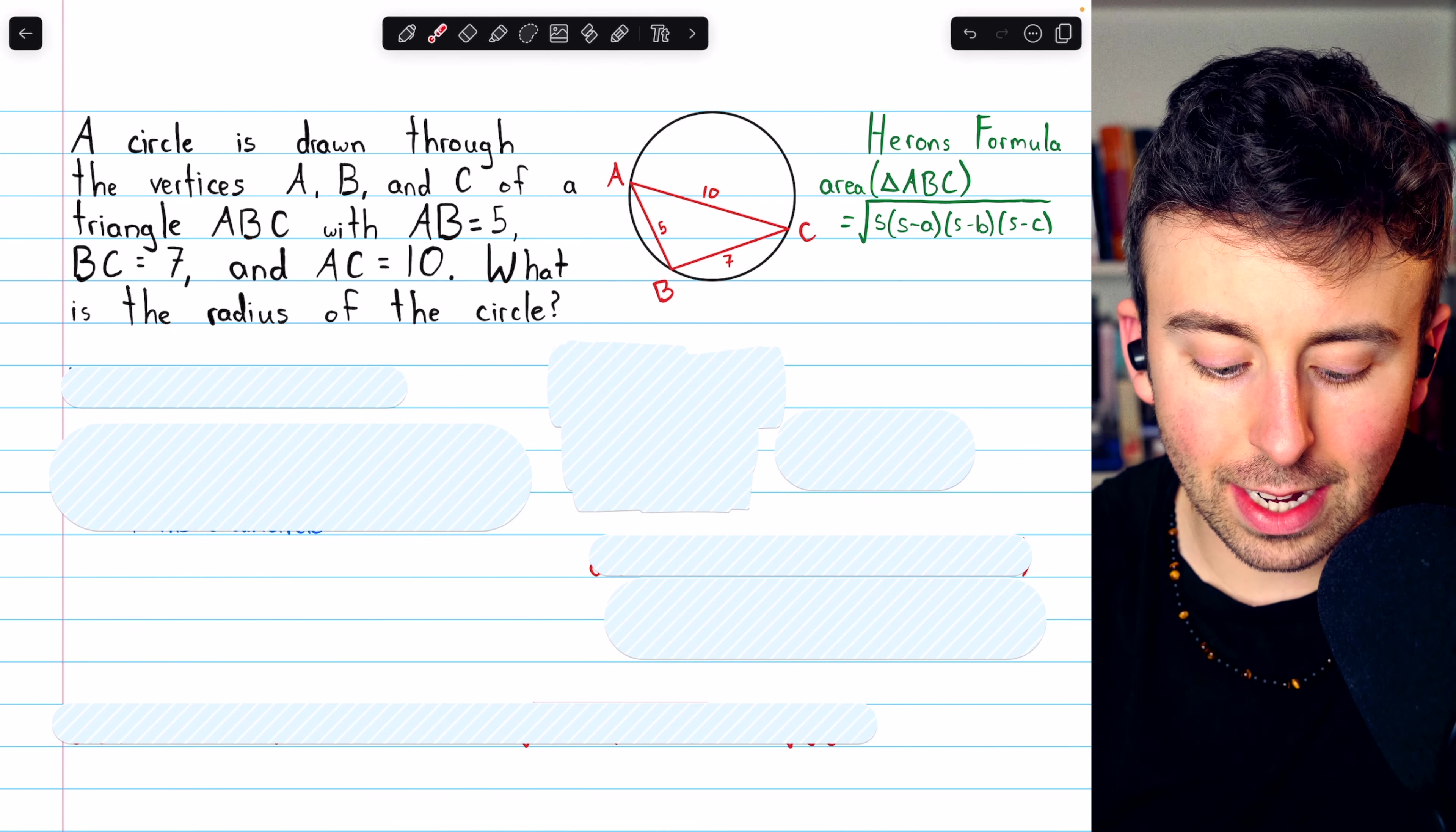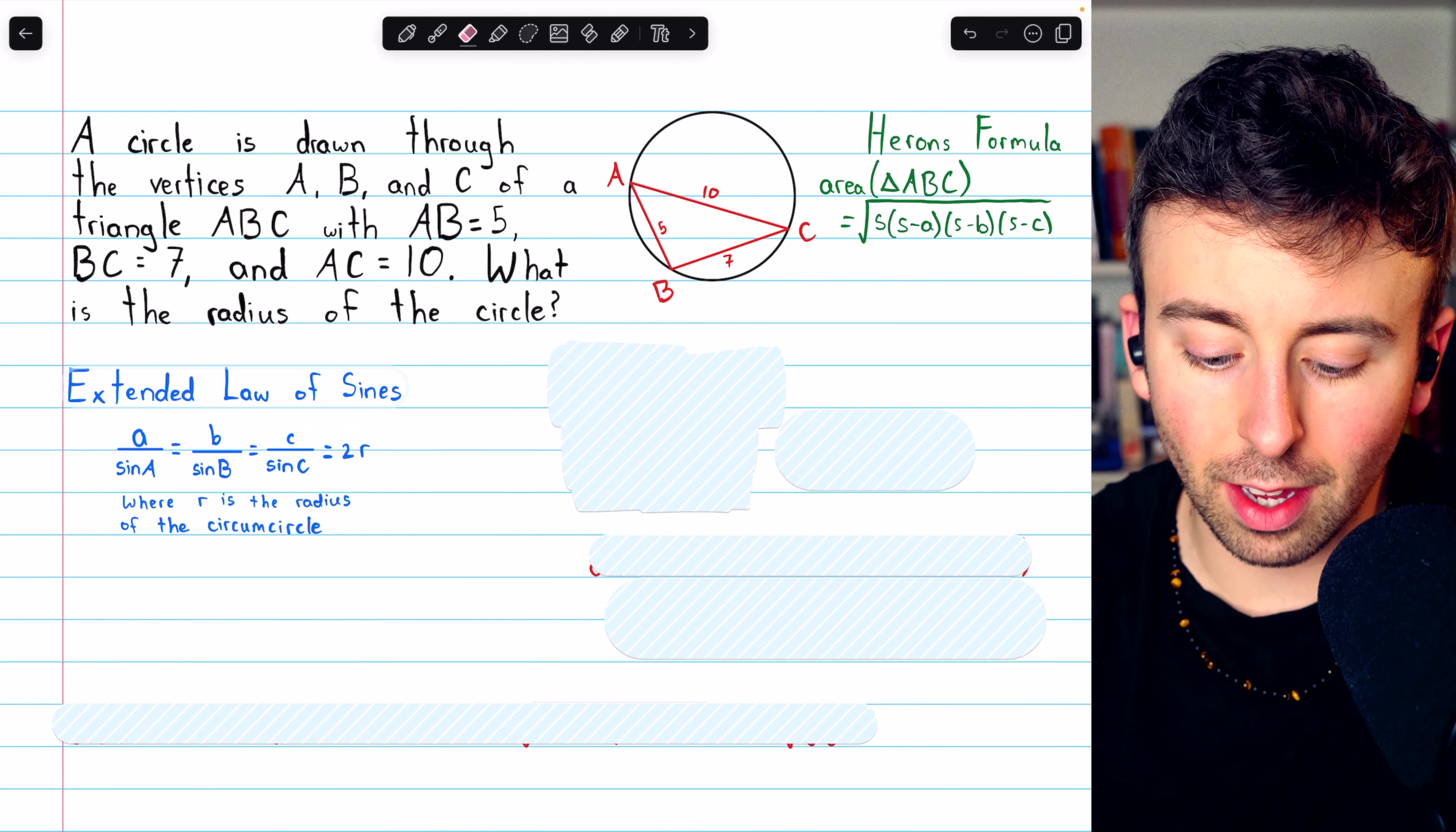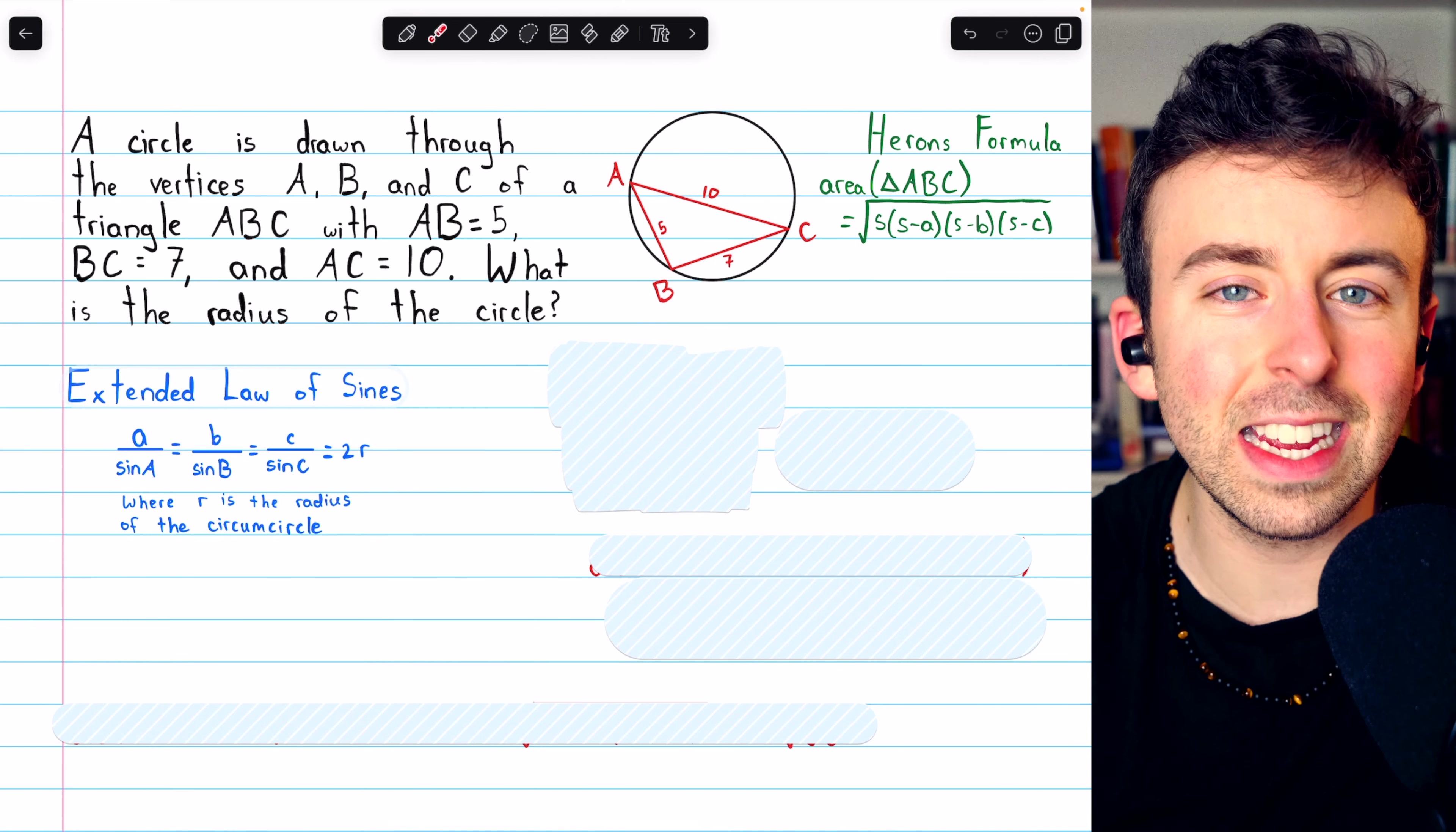We're also going to need the extended law of sines, which relates the sine function to the radius of the circumcircle. You can see that A over sine A equals B over sine B equals C over sine C.